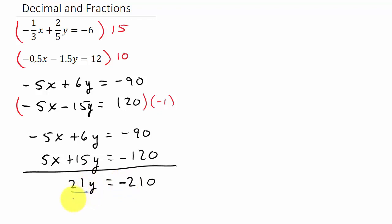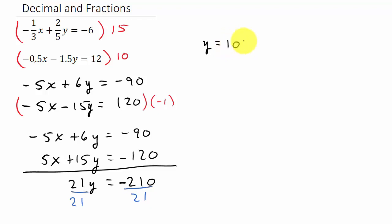So I'm going to divide both sides by 21. I've got 21y equals negative 210, so dividing both sides by 21 gives me y equals negative 10. There's y, but now I need x.